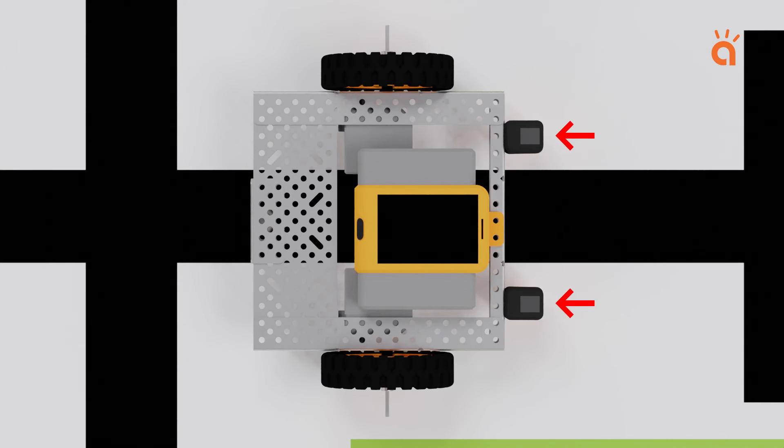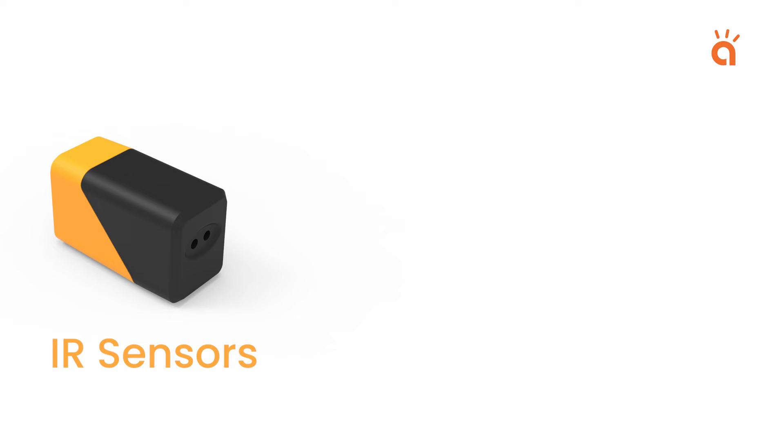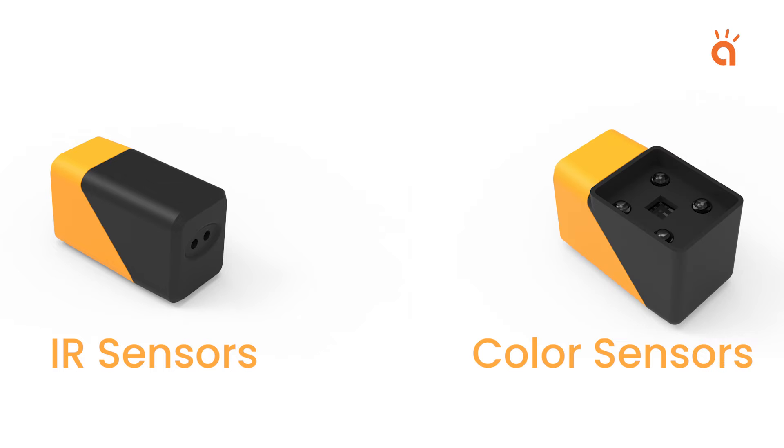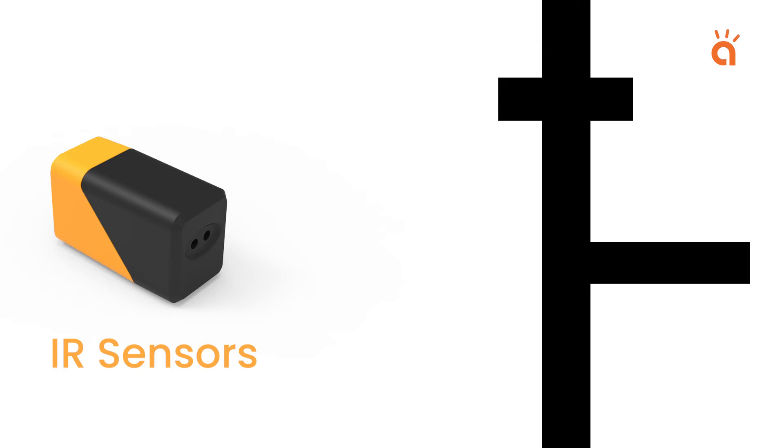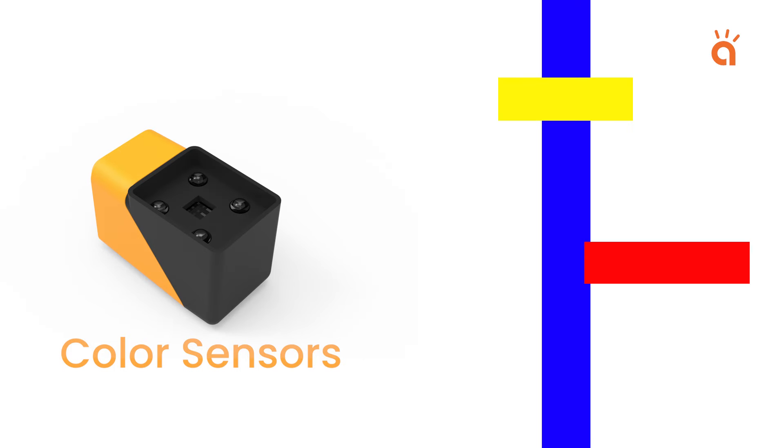Next, we need two sensors to detect the line. You can use IR sensors or color sensors based on the line track. If it is a black line track, you can use IR sensors. While for any other color, you need to use the color sensors.